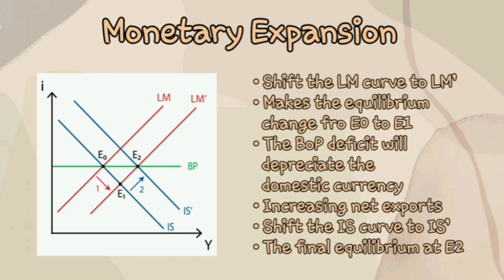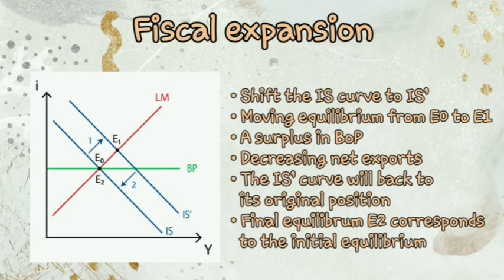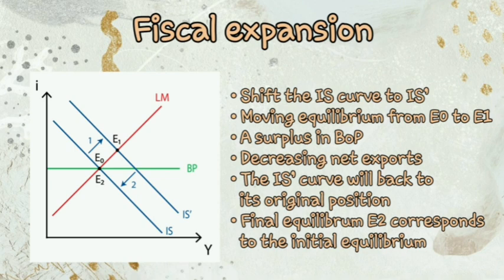An expansionary fiscal policy shifts the IS curve to IS prime, moving equilibrium from E0 to E1. The economy will have a balance of payments surplus. In the case of flexible exchange rates, this appreciates the domestic currency, decreasing net exports since we import more with less money while foreigners import less of our products. This drop in net exports shifts the IS prime curve back to its original position, and the final equilibrium E2 corresponds to the initial equilibrium.